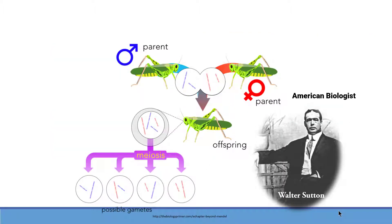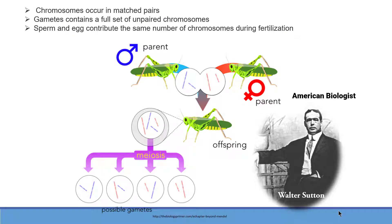On the other hand, in the same era, an American biologist named Walter Sutton was working on grasshoppers and he proposed that chromosomes occur in matched pairs. And gametes contain a full set of unpaired chromosomes and they contribute the same number of chromosomes during fertilization in the offspring.